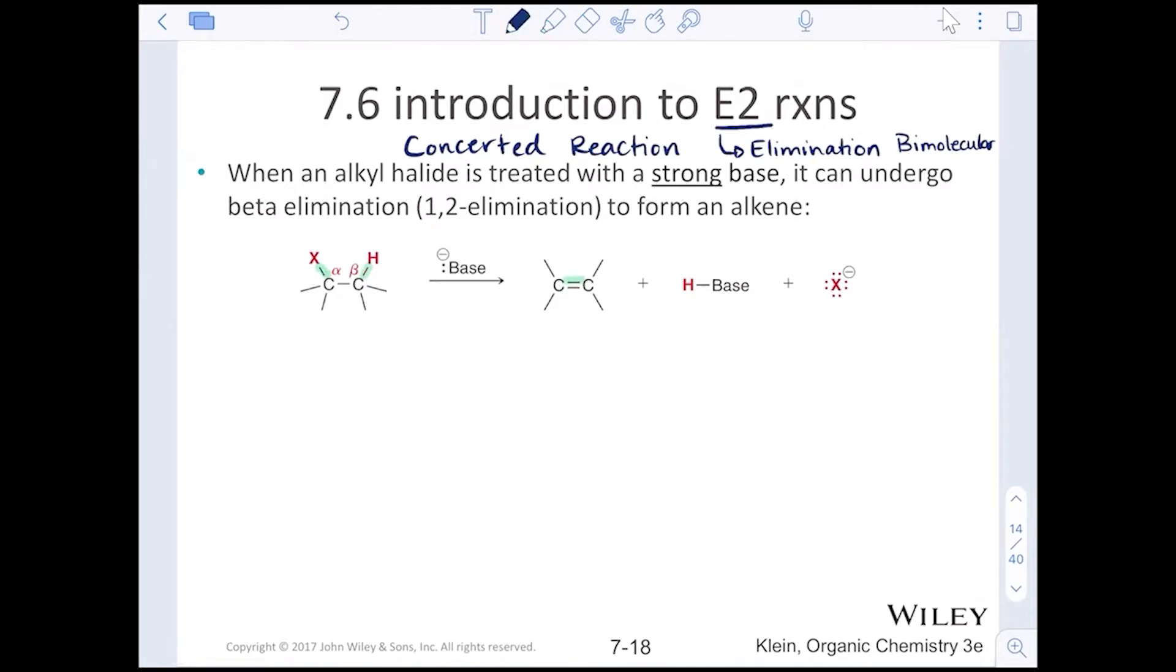Let's just go over that curved arrow notation. The base will pick up a hydrogen. The hydrogen to carbon's bond electrons will roll down to make the new pi bond and will kick out the leaving group. So there is a proton transfer and a loss of a leaving group happening at the same time.